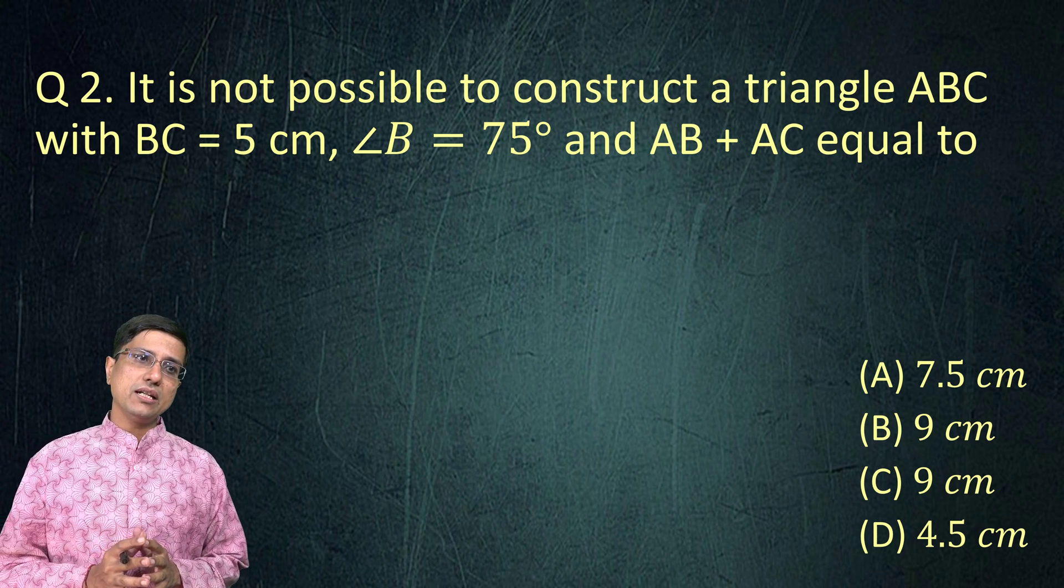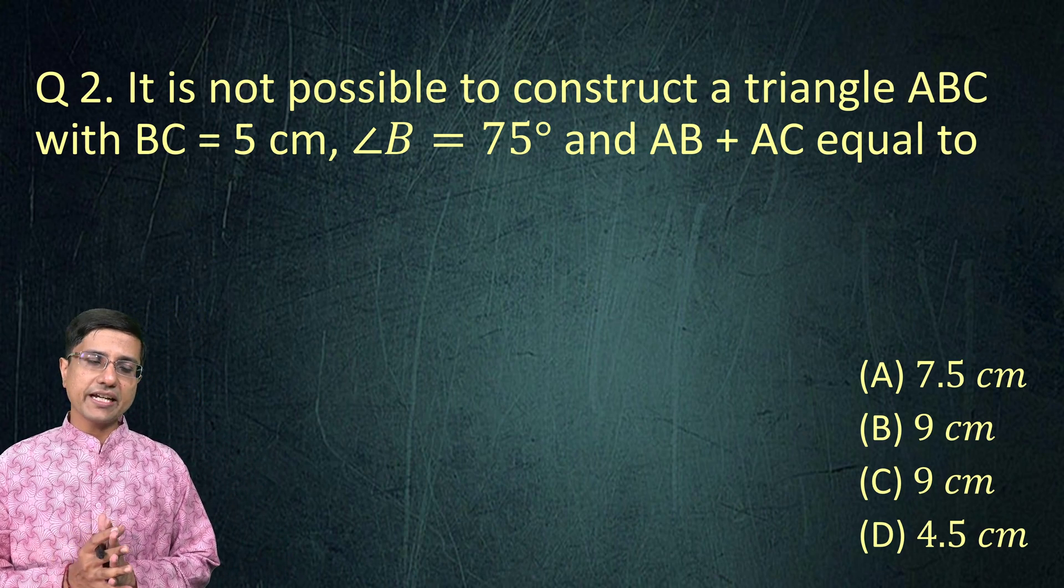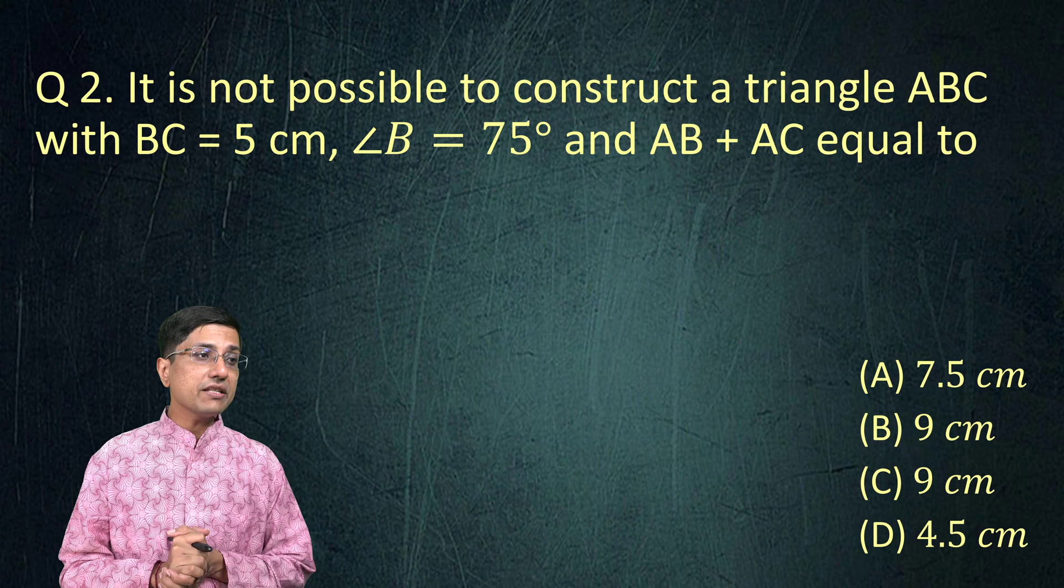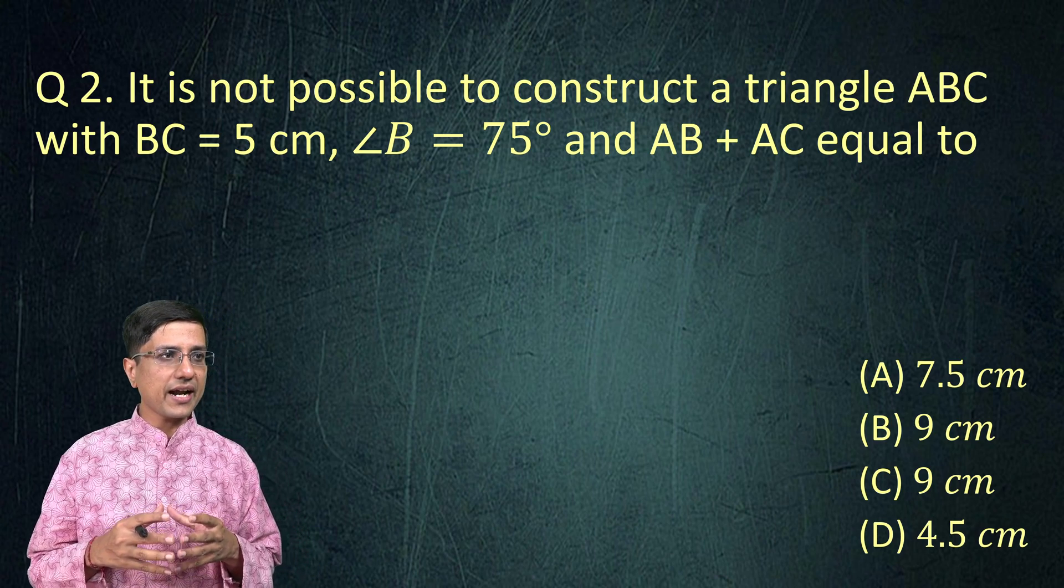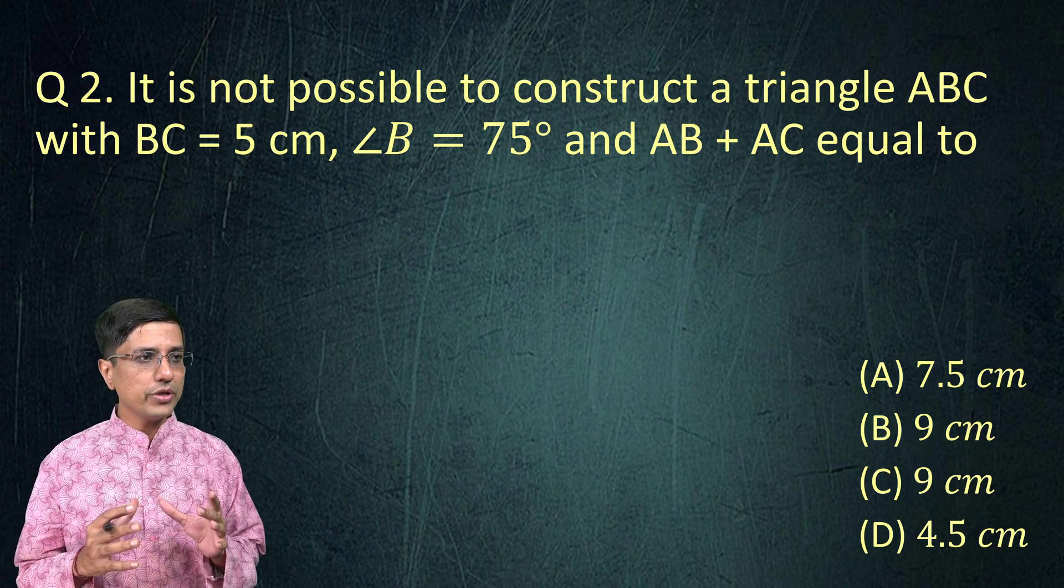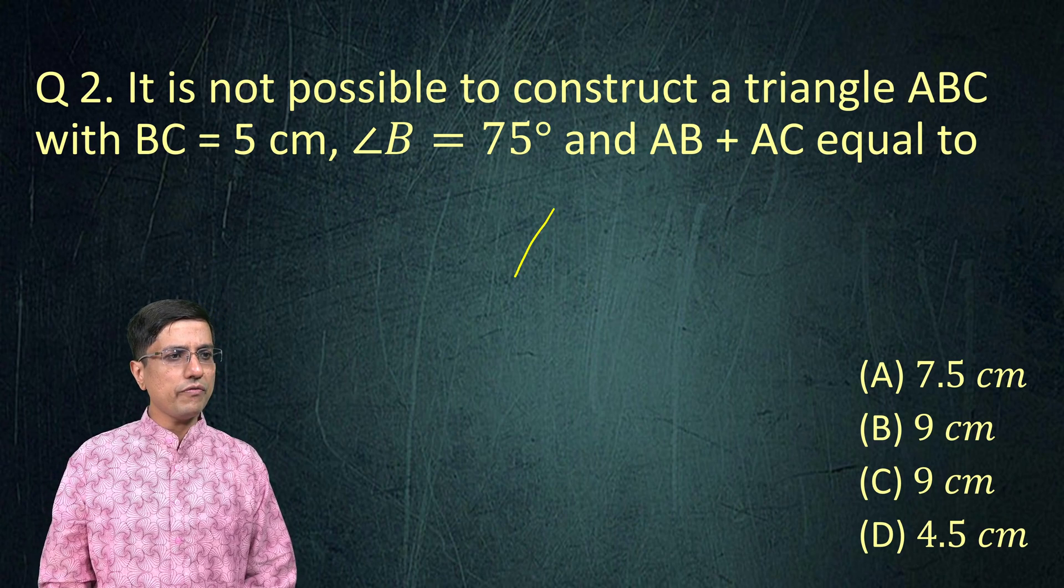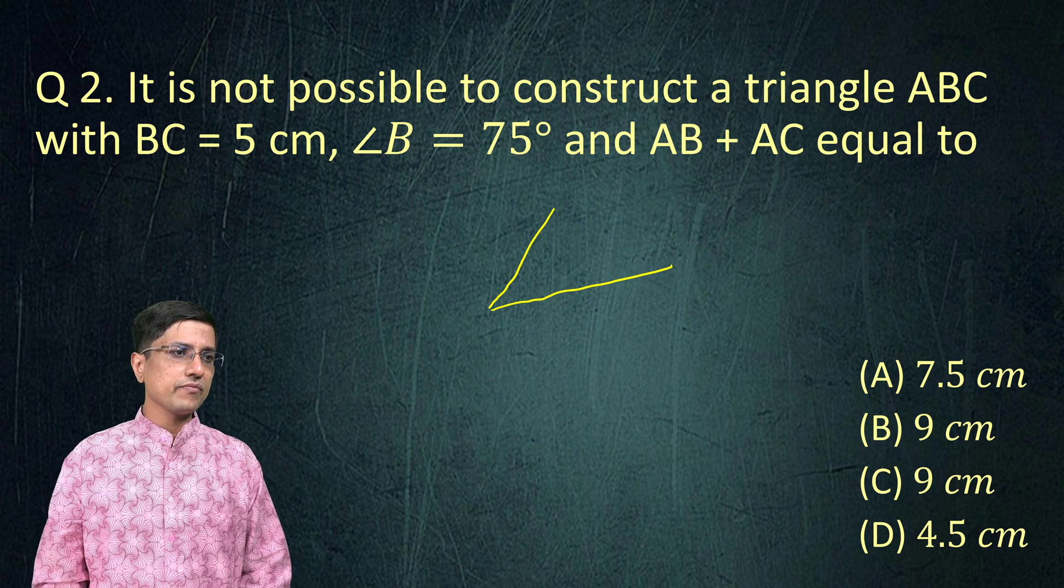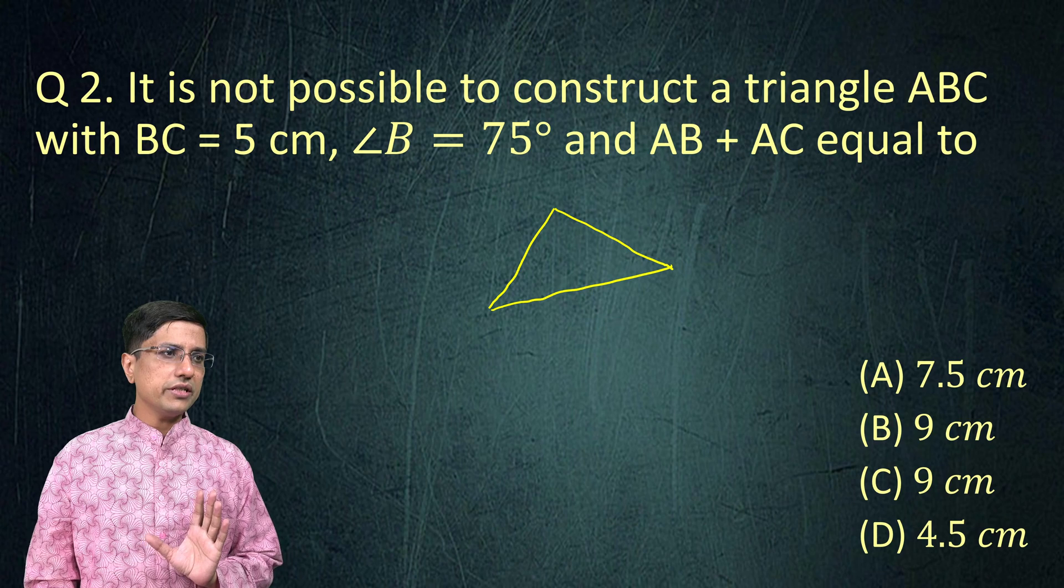It is not possible to construct a triangle ABC. So this is our second question for this class, Class 9. It is not possible to construct a triangle ABC with BC = 5. So there is one question on triangle which is always asked. This is asked in all kinds of Olympiads actually.